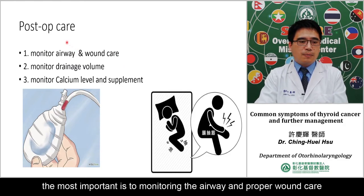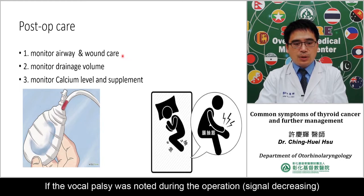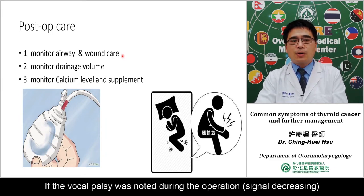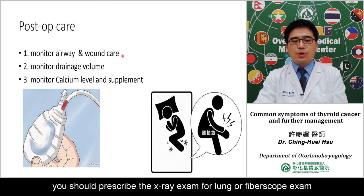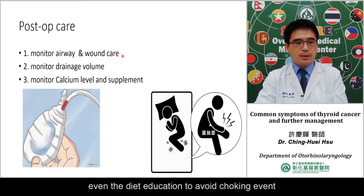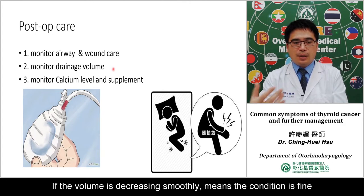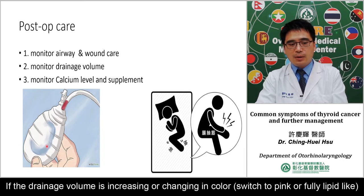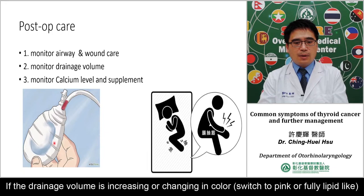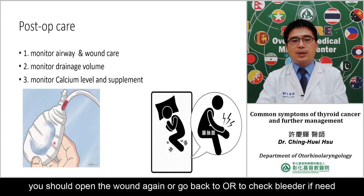For post-operative care, first we should monitor the airway and provide proper wound care. If vocal palsy is detected during surgery or there is no signal on intra-operative nerve monitoring, be aware of vocal palsy. Check with X-ray or fiber-optic scope to assess vocal fold motion, and provide diet education to avoid choking. Also monitor the drainage volume — if decreasing slowly, the patient is fine. If the volume is increasing or the color changes to pink or to a chylous fluid, you should re-open the wound or return to the OR to check for bleeding.